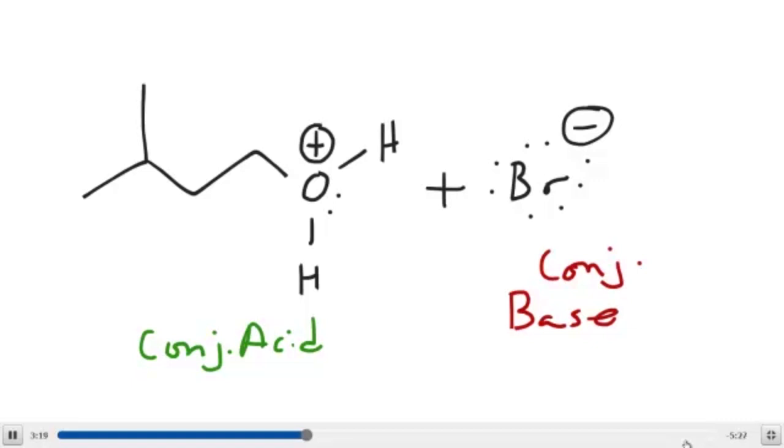Just as we've said previously, the oxygen on this conjugate acid, our alkyloxonium ion, is not happy with the fact that it has a positive charge. It wants to be neutral or negative. And so, one of these three bonds needs to go.